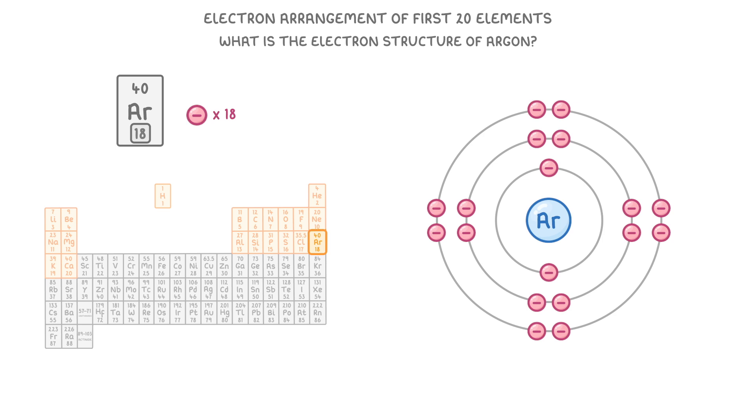We can also show this electron structure with numbers though, rather than drawing out all of these shells. And to do that, we would just do 2 comma 8 comma 8 to show there's 2 electrons in the first shell, 8 in the second, and 8 in the third.